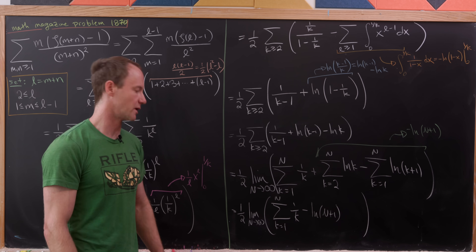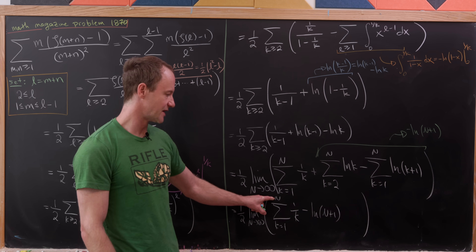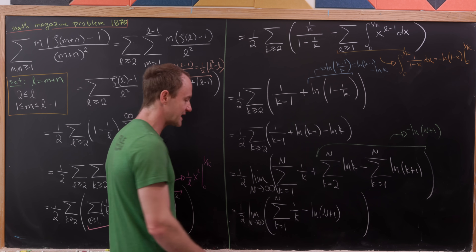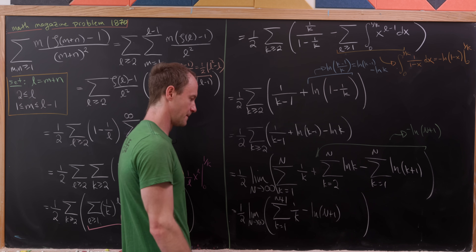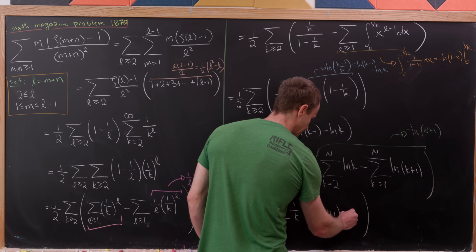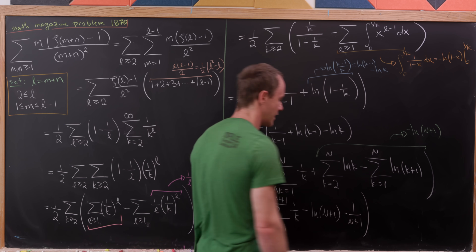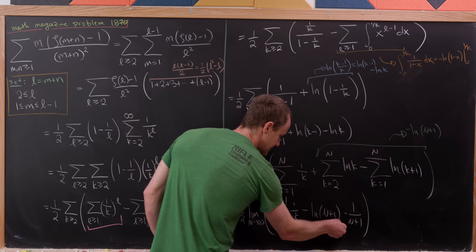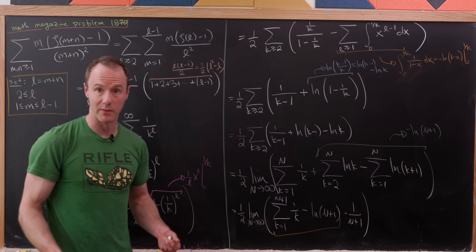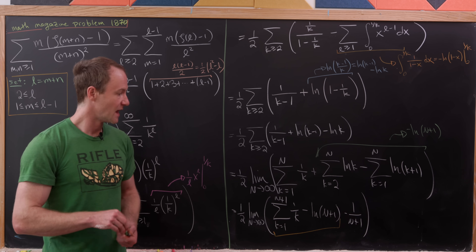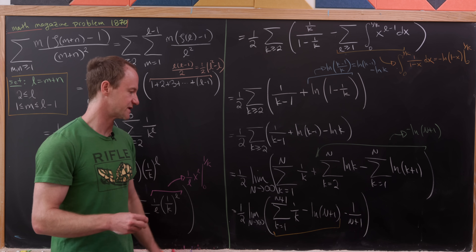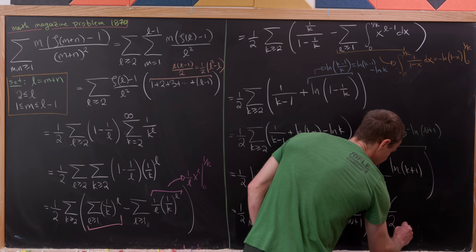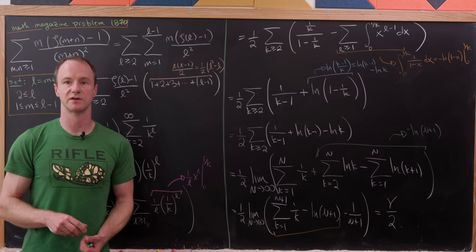This looks very close to the Euler-Mascheroni constant. To make the index match the argument of the natural log, we end the harmonic sum at N plus 1 and subtract off 1 over N plus 1 to compensate. Now this limit is exactly the Euler-Mascheroni constant gamma, and the limit of 1 over N plus 1 is 0. So our final answer is gamma over 2.